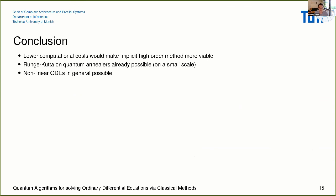In conclusion, we wanted lower computational costs for high-order implicit methods to make them more viable. We presented the Runge-Kutta method on quantum annealers, which can also be mapped to adiabatic quantum computers. On quantum annealers it is already possible to demonstrate this working at small scales, and we also generalized it to non-linear ODEs. Thank you for listening, and I'm happy to take your questions.